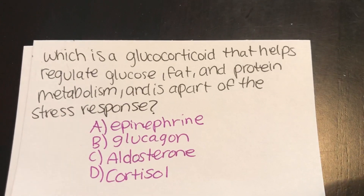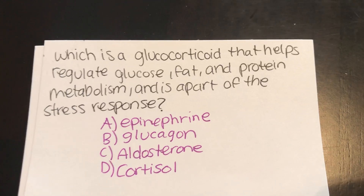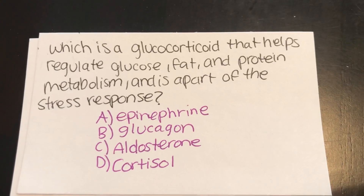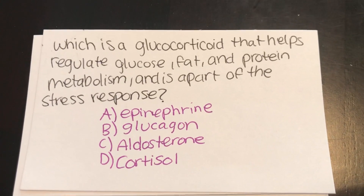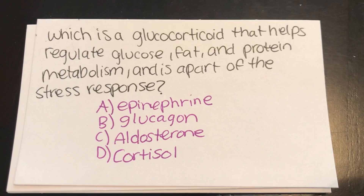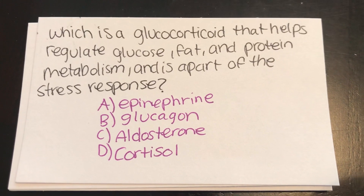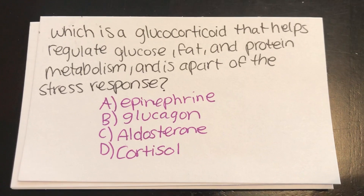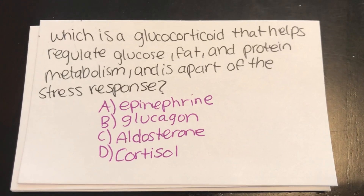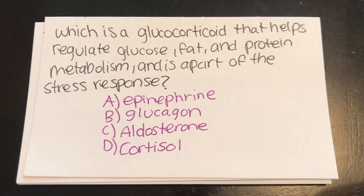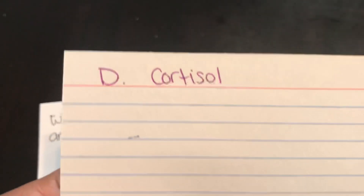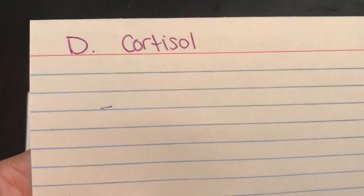Which is a glucocorticoid that helps regulate glucose, fat, and protein metabolism and is part of the stress response? A, epinephrine. B, glucagon. C, aldosterone. Or D, cortisol. Answer: D, cortisol.